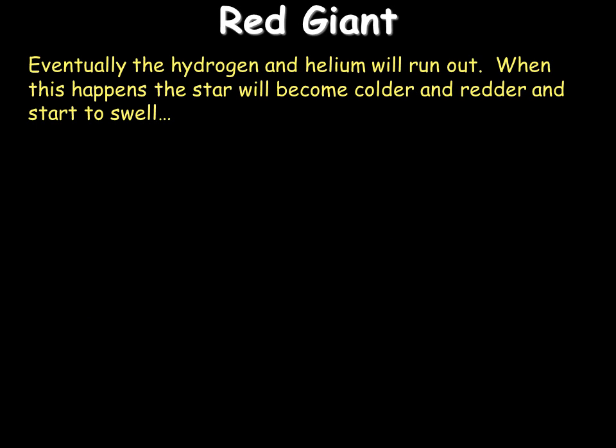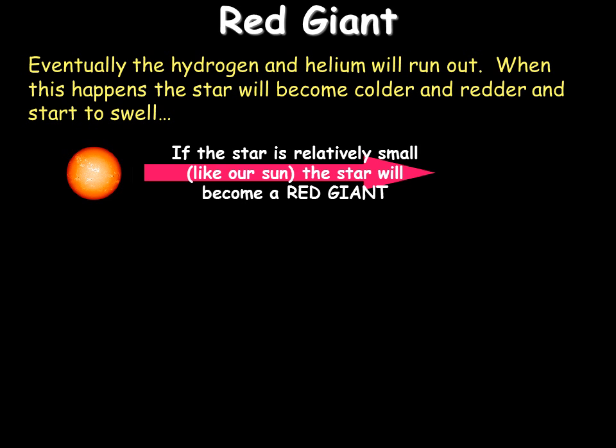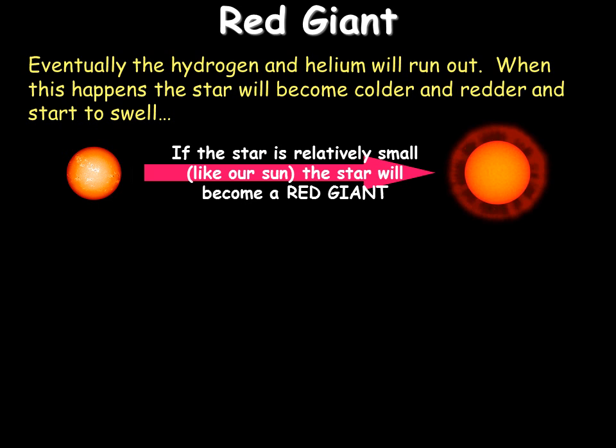What happens eventually is that the fuel — the hydrogen and the helium — will run out. When this happens the star will begin to die and it will change. If it's a very small star, for example our Sun is quite a small star, it will turn into a red giant.